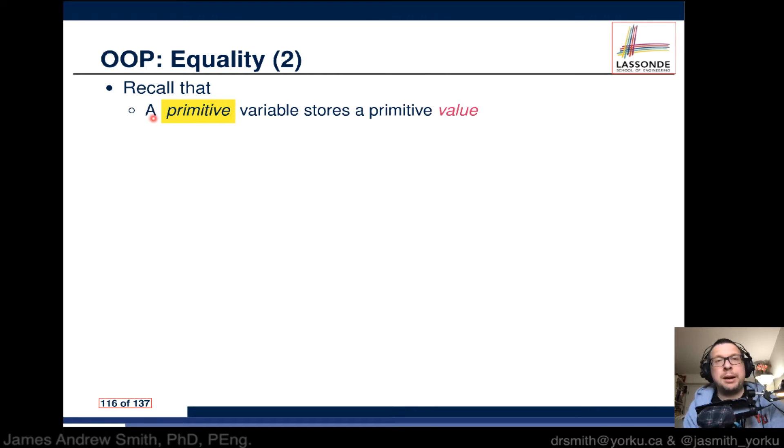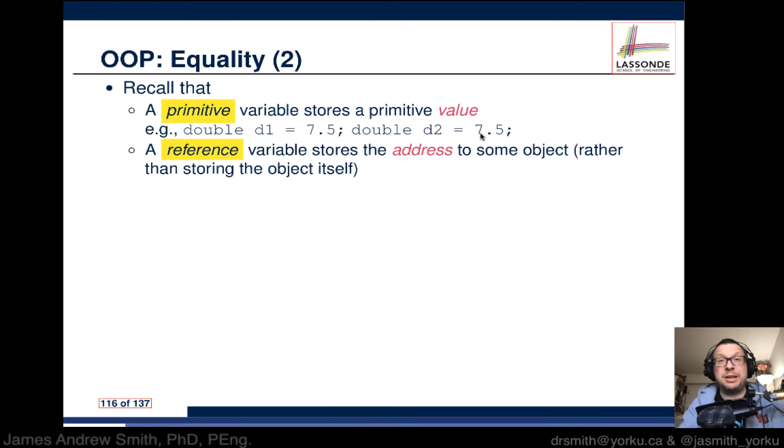So a primitive variable stores a primitive value like this: we say double d1 is equal to or assigned a value of 7.5 and d2 has a value of 7.5. If they're equal, the answer will be yes.